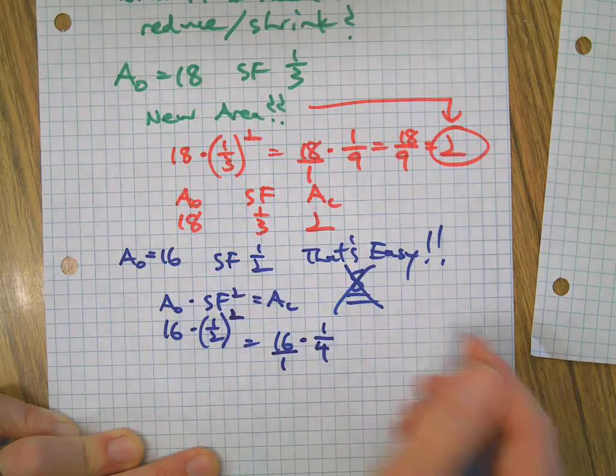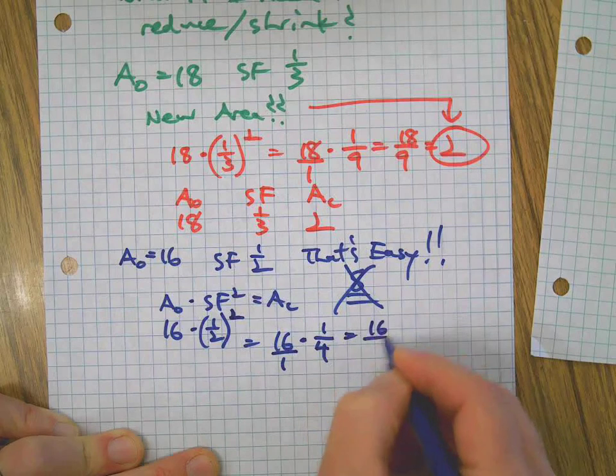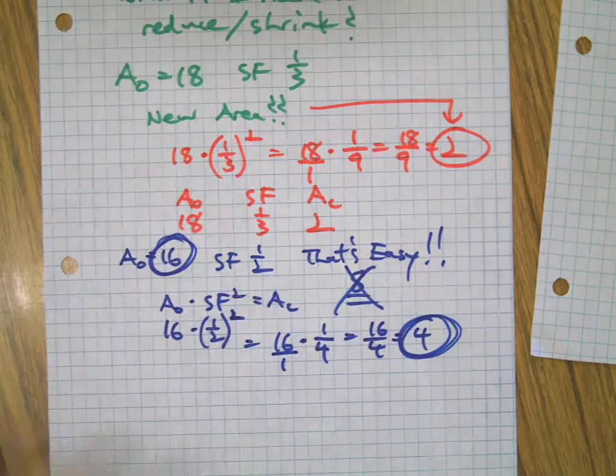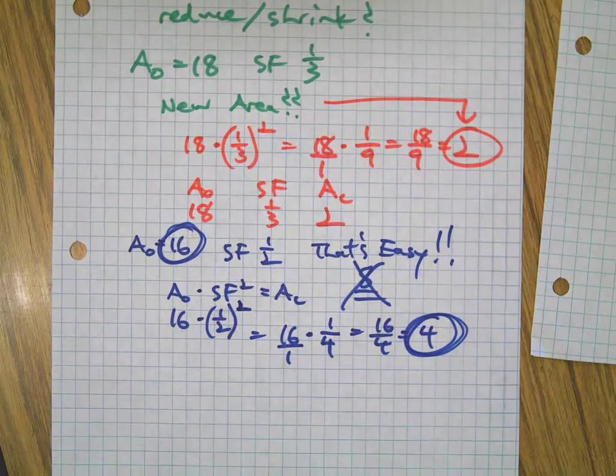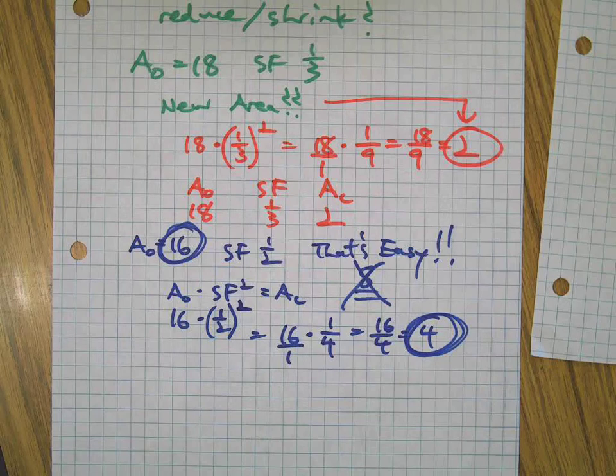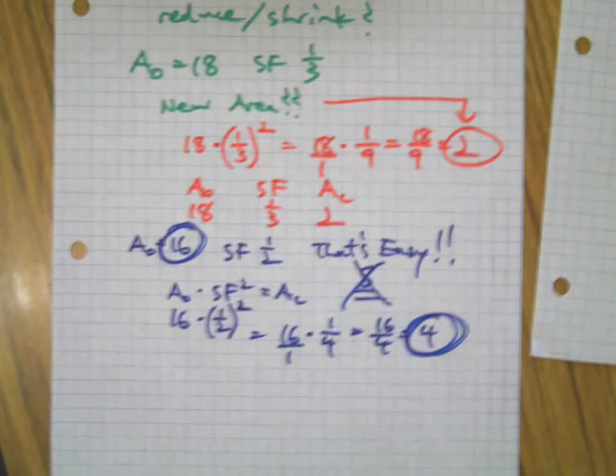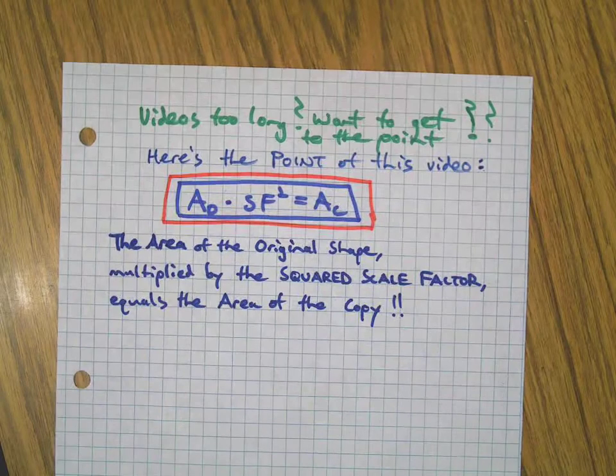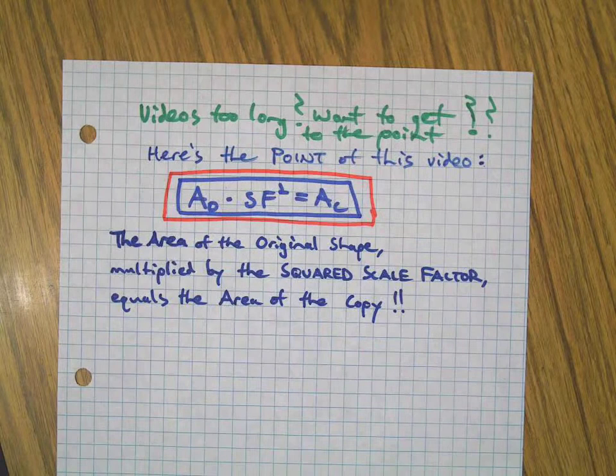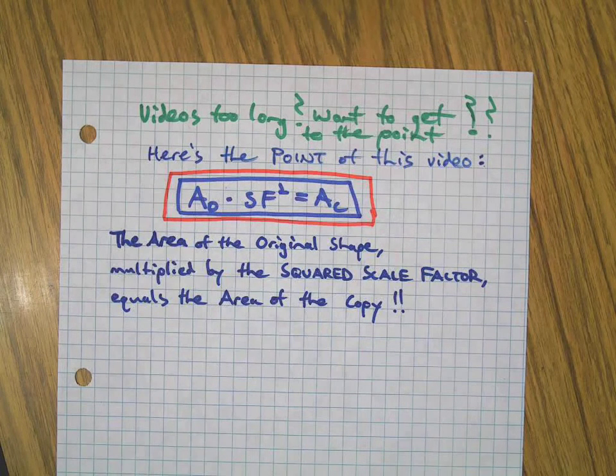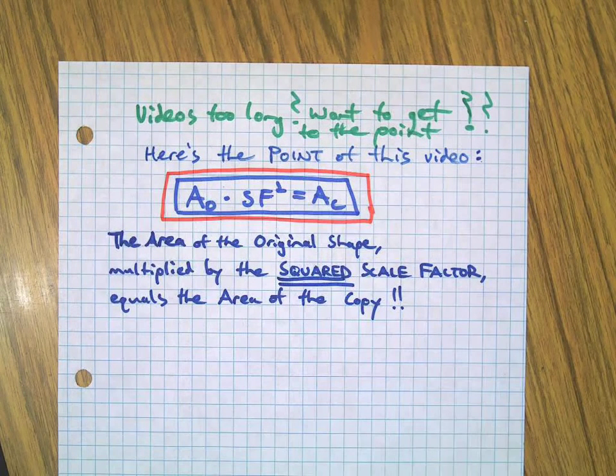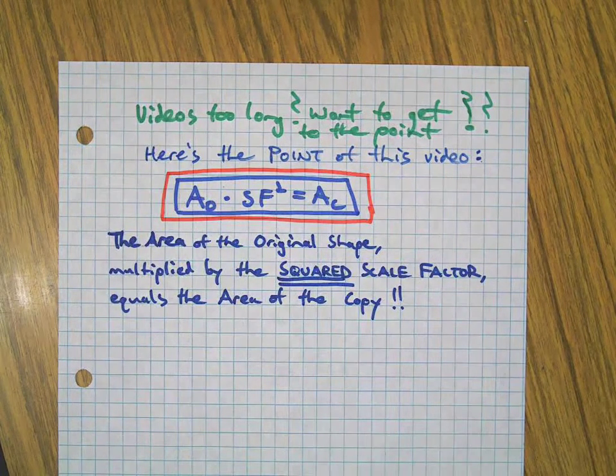If we put a one on the bottom there to make this multiplying a little easier, we see that the new area is actually four. And there's that relationship of the square. So we've just proven that it works for reductions and enlargement, getting bigger and smaller, which gets us back to the point: the area of the original shape multiplied by the squared scale factor gives you the area of the copy.